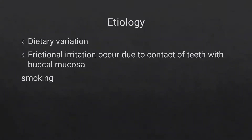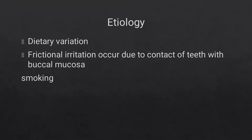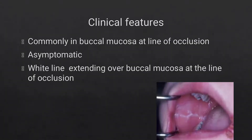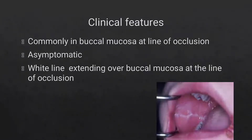The etiology for linea alba includes dietary variation, frictional irritation occurring due to contact of the teeth with the buccal mucosa, and smoking. These are some of the etiologies for linea alba. Now, the clinical features for linea alba: